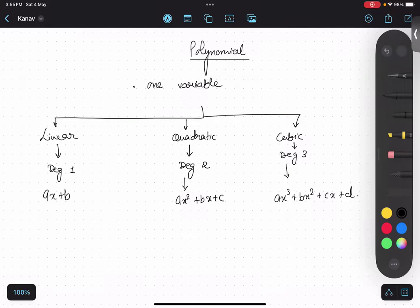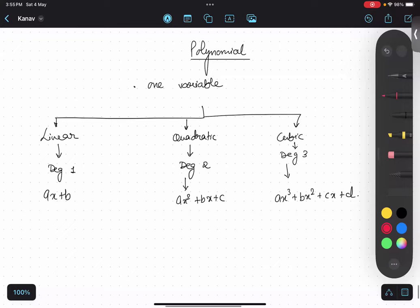Now, the most important part over here is, if the degree is 1, maximum zeros would be 1. I said maximum zeros. And over here maximum zeros would be 2, and here 3.